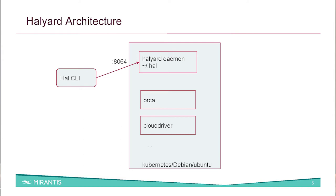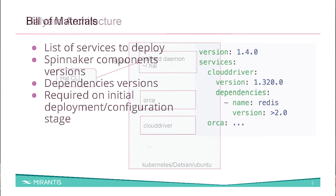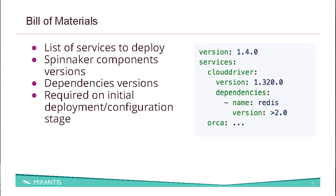Here's a short overview of the architecture. Halyard is basically a daemon and CLI, and it can deploy Spinnaker for you on top of Kubernetes, on top of Debian or Ubuntu, actually within the same virtual machine. All the state is stored on this daemon or on the VM where it's running, and it's available on a specific predefined port. In order to deploy Spinnaker with Halyard, you have to first define the components, versions, and dependencies — this is the concept of the bill of materials, a file that describes such dependencies. It's really needed only during the deployment and installation stages.